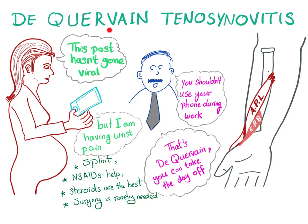De Quervain's tenosynovitis. It's a tenosynovitis, which means inflammation of the tendon sheath — the sheath surrounding the tendon — and it occurs in females, usually young or middle-aged pregnant females who use their smartphones a lot for texting or carry their baby.